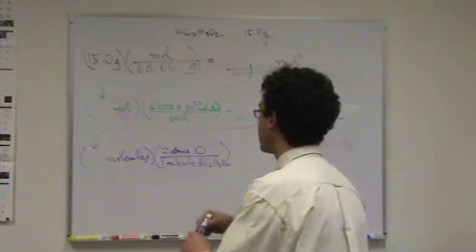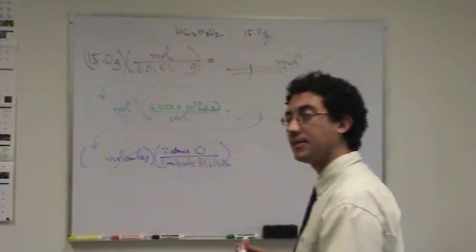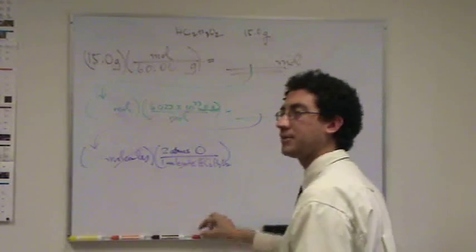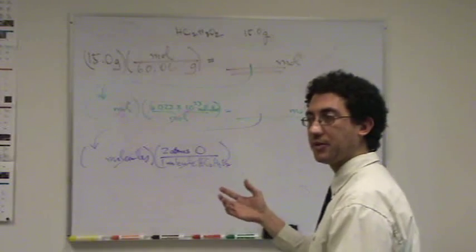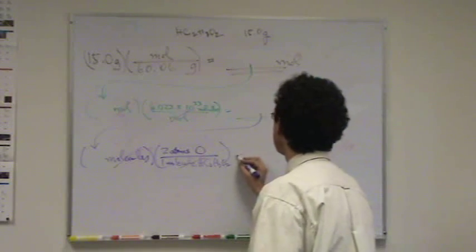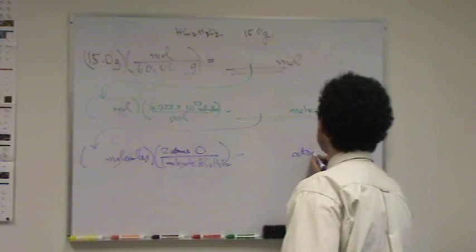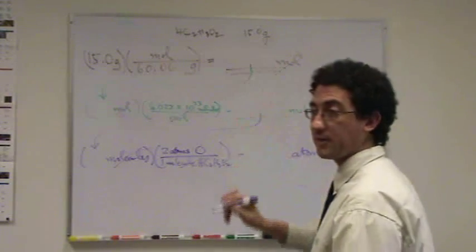What that will do is cancel out molecules of acetic acid, and now I'm left with atoms. So it's going to be double the number, whatever that is. And this will get me atoms of oxygen in 15 grams.